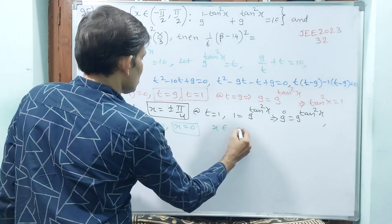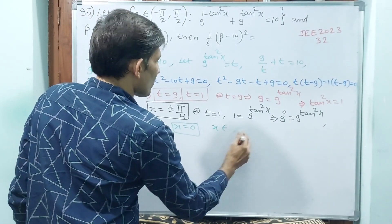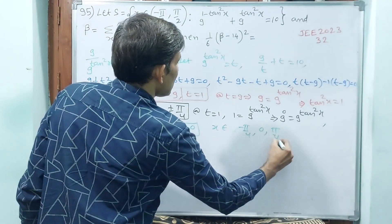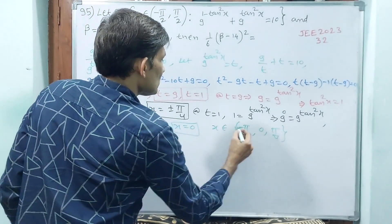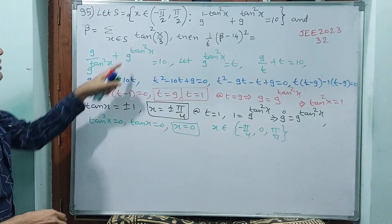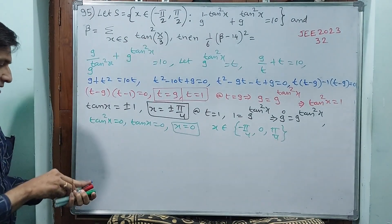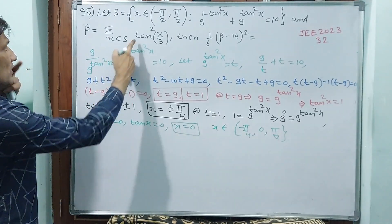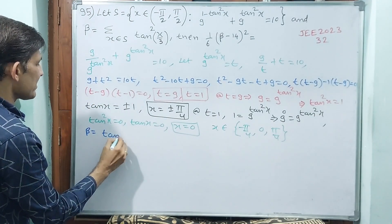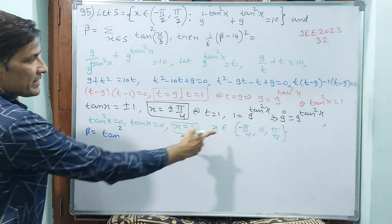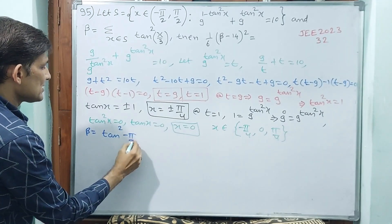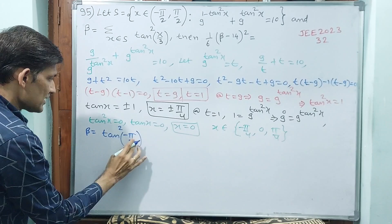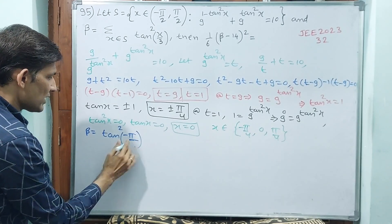That means x belongs to minus pi by 4, 0, and plus pi by 4 — all valid. These 3 values you have to substitute into sigma. Beta equals tan squared of minus pi by 4 into 3 — that is, minus pi by 12 — plus tan squared of 0 by 3, plus tan squared of plus pi by 4 into 3, which is plus pi by 12.